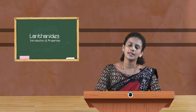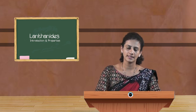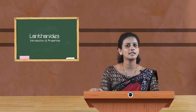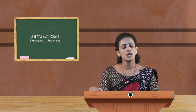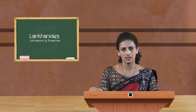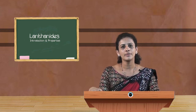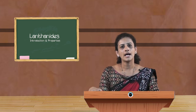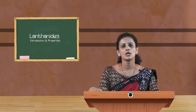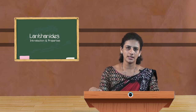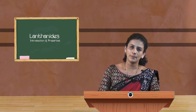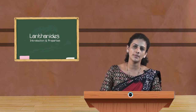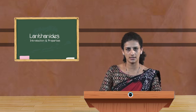The next property is the colour of lanthanides. The colour of elements depends upon the unpaired electrons present — elements with unpaired electrons are coloured and those with paired electrons are colourless. The exact colour of the element depends upon the number of electrons present in it.